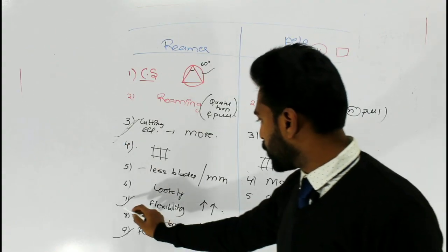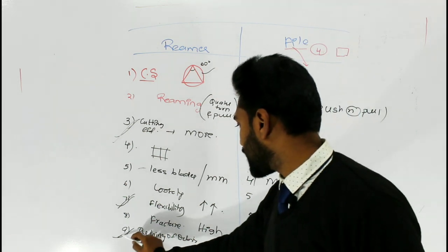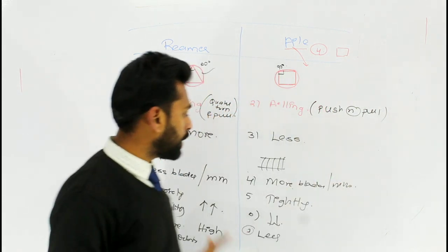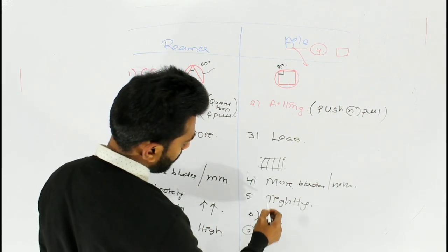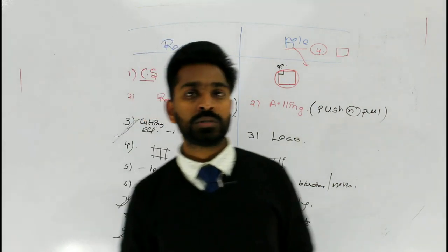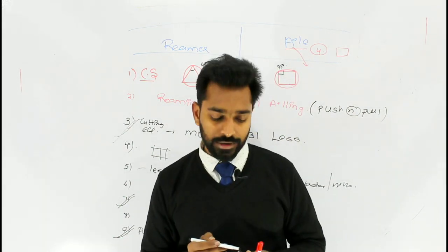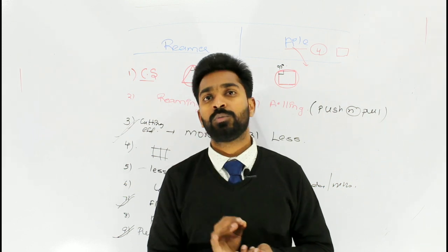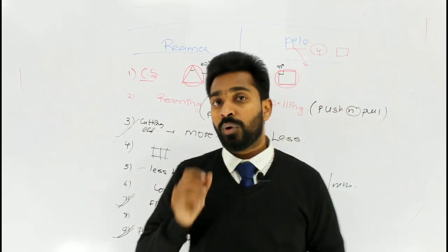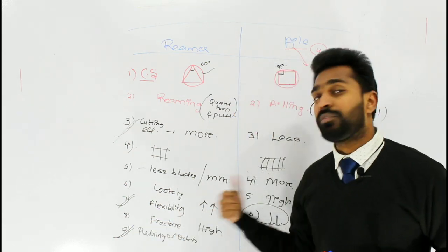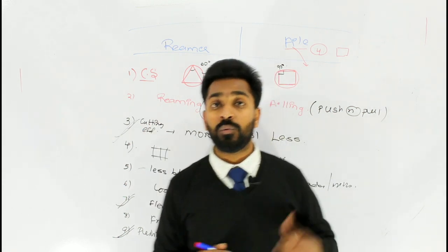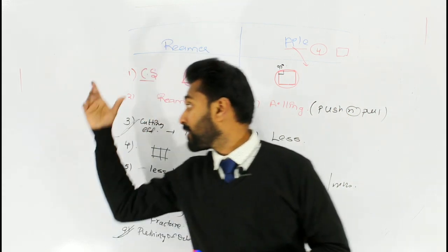To summarize: the reamer has more cutting efficiency, more flexibility, and less chances of pushing debris into the apical area — these are the main advantages of the reamer. The file has only one advantage: chances of fracture are very less. This is the reason why we use the file in the initial preparation of root canal treatment. Whenever you start a root canal, the first instrument used is a file, because despite the reamer's many advantages, it is more prone to fracture.